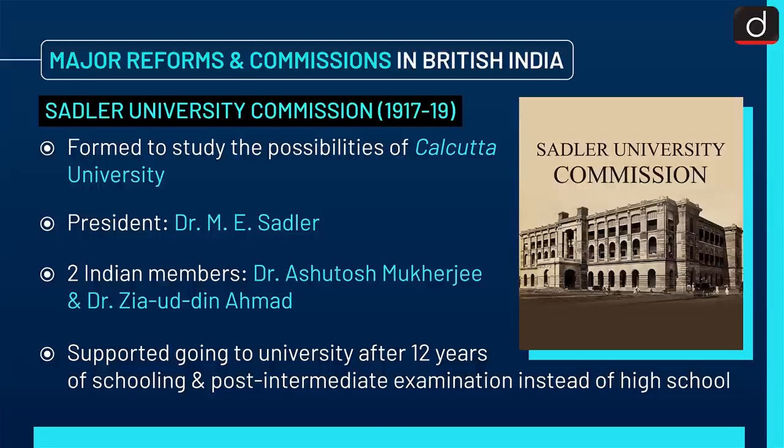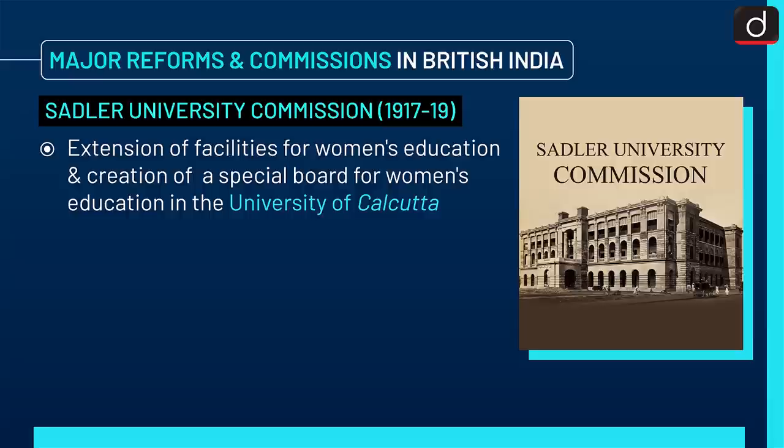The commission supported going to university after 12 years of schooling and a post-intermediate examination instead of high school. It also recommended extension of facilities for women's education and creation of a special board for women's education in the University of Calcutta.